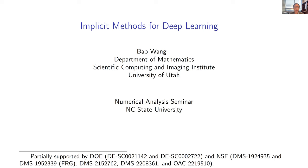Hello everyone. Today we have Dr. Bao Wan from University of Utah to give us a numerical analysis seminar talk. Dr. Bao Wan is an assistant professor from the Department of Mathematics and Scientific Computing and Imaging Institute from University of Utah. He got his PhD from Michigan State University in 2016, and after that he was an assistant adjunct professor in mathematics at UCLA before joining the University of Utah. His work has been widely supported by many agencies including DOE and NSF, and he has won a lot of awards. Today he's going to talk about implicit methods for deep learning. The floor is yours.